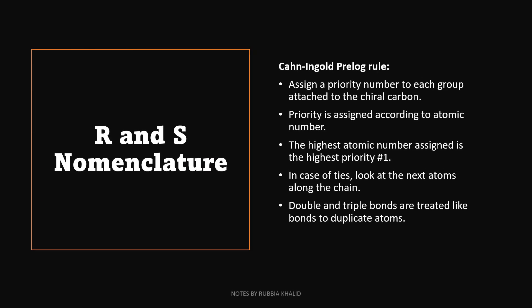Next, we look at R and S nomenclature. When assigning R and S nomenclature, we follow different rules. First, we assign a priority number to each group attached to the chiral carbon. Remember, chiral carbon is a carbon which is bonded to four different groups or atoms. Priority is assigned according to the atomic number. Highest atomic number is assigned the highest priority, which is one, and the lowest priority is four.